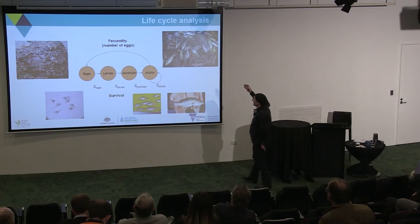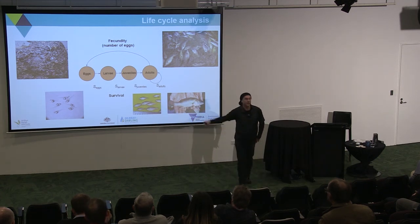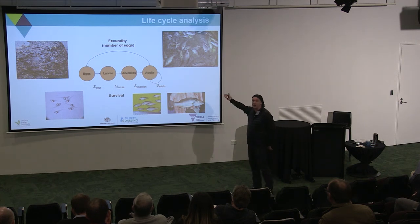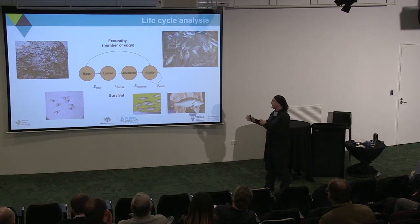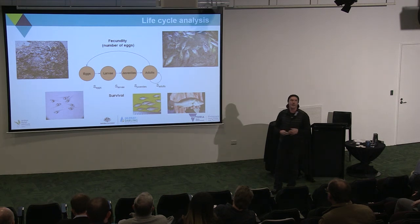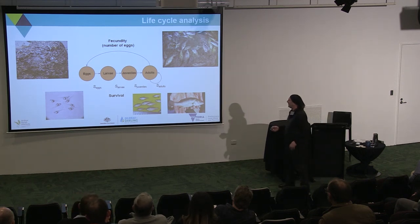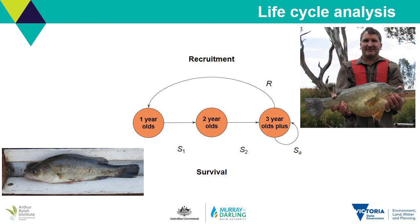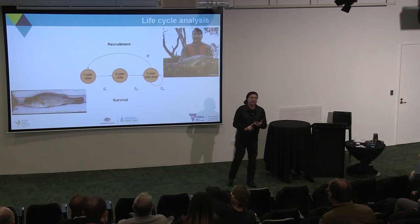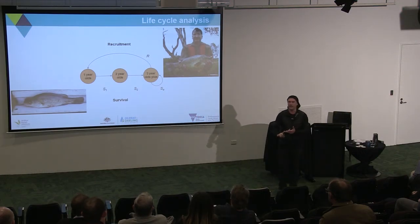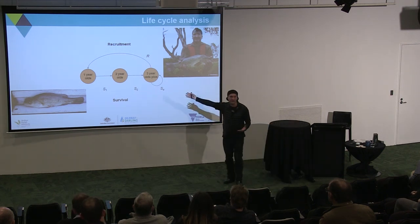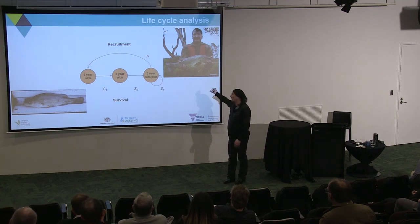We look at the life cycle analysis and identify four stages of development for Golden Perch: eggs, larvae, juveniles, and adults. Adults produce eggs. We look at how flow influences certain stages of the life cycle. We convert this into an age-based model, where recruitment is a process of eggs hatching into larvae, surviving to fingerlings, young of year, to one-year-olds. One-year-olds survive to become two-year-olds, two-year-olds survive to become adults, and once you're an adult, you're an adult forever.